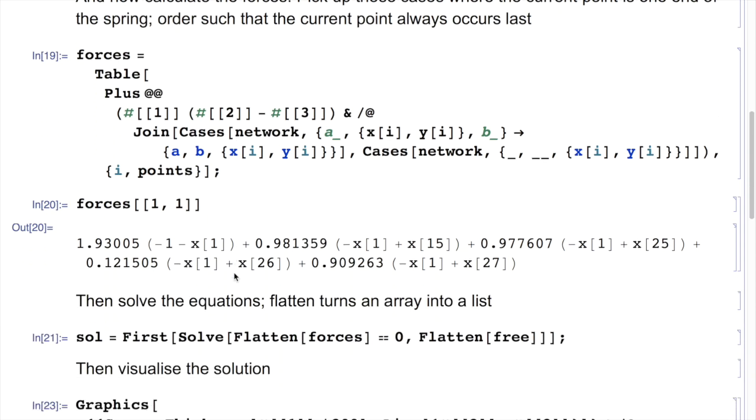So for example, if I look at the forces one, one looks like, you can see that one is connected, is for the x in that case, one is connected to the first point, to one of the corners, and to the fifteenth point, the twenty-fifth point, the twenty-sixth point, and the twenty-seventh point. Why that way? I don't know, but that's just pure luck.